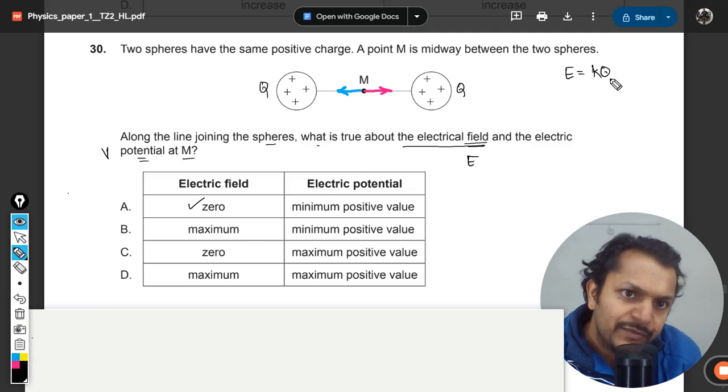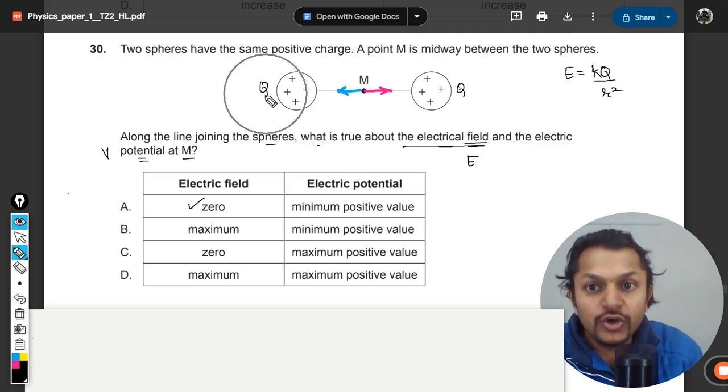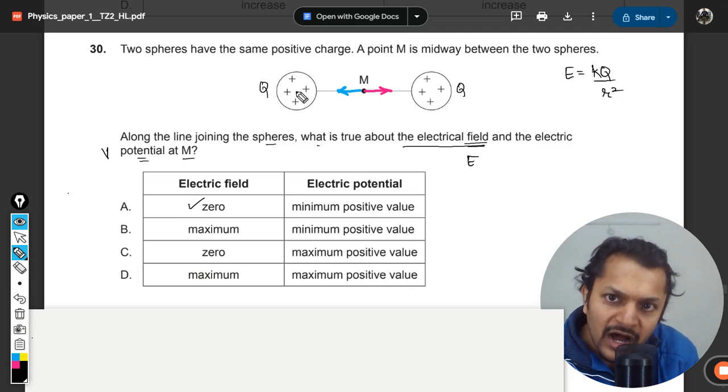What is the formula for electric field strength? It's kQ divided by r squared. So k is constant in both cases, Q is constant in both cases, and r from the center to this is also the same because it's a midpoint.